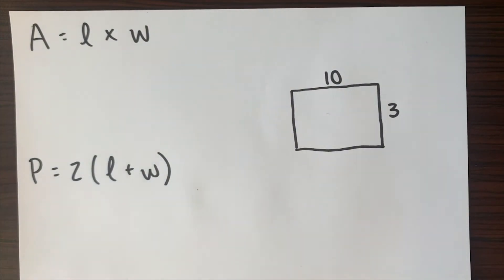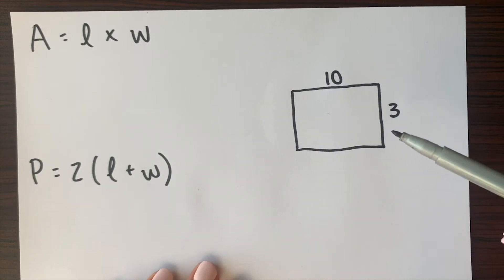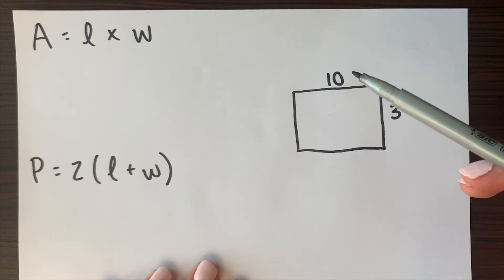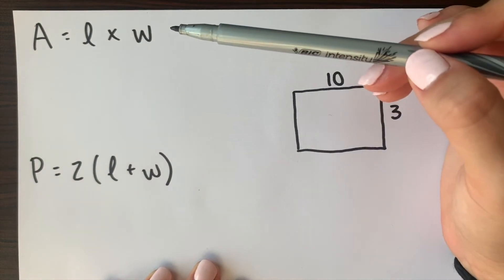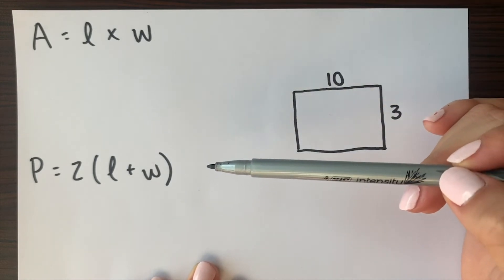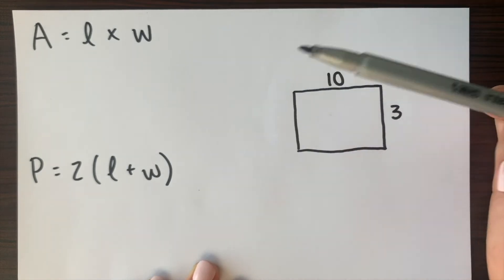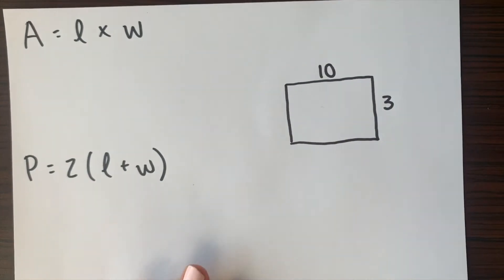Now for our second example that I have here I already went ahead and drew my rectangle and we have our length and our width and we also have our equation for area and our equation for our perimeter. Like I said make sure that you rewrite it just so that it's easier for you to remember in the future and you don't have to constantly go back and check what the equation is.